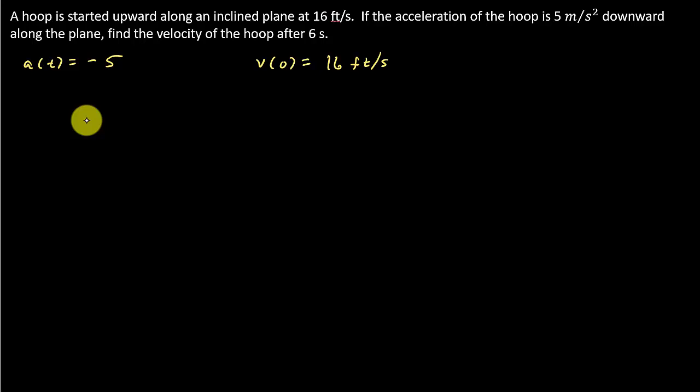Alright, so we've got to come up with the velocity function. Well, the velocity is equal to the integral of the acceleration function. Remember, if you have a position function, the derivative of the position function is the velocity, the derivative of the velocity is the acceleration. So if I integrate the acceleration function, I end up with the velocity function.